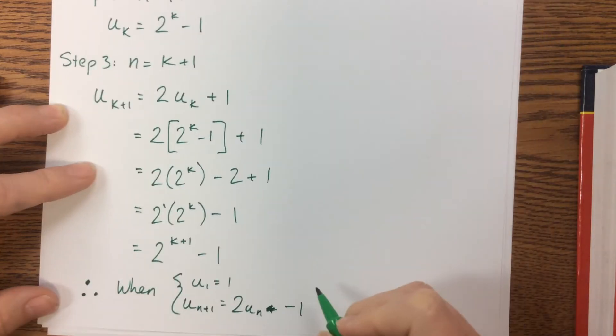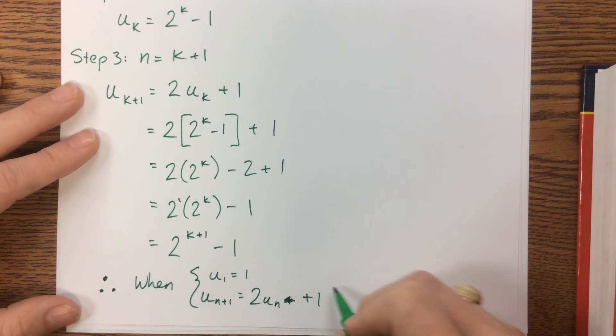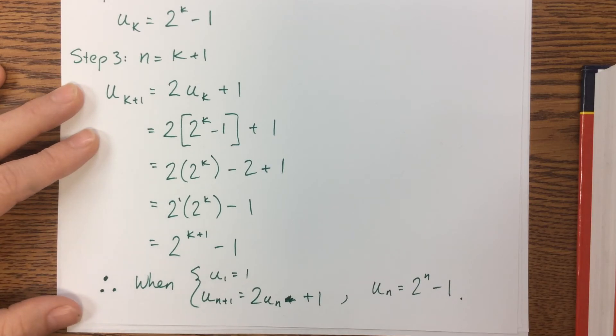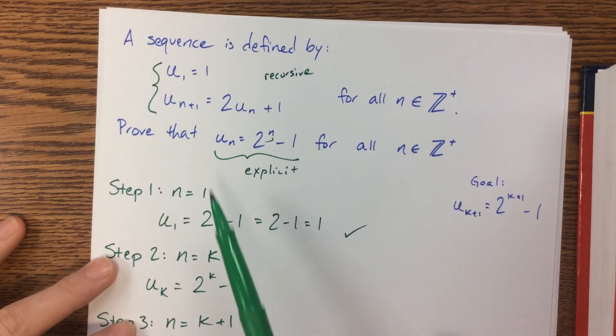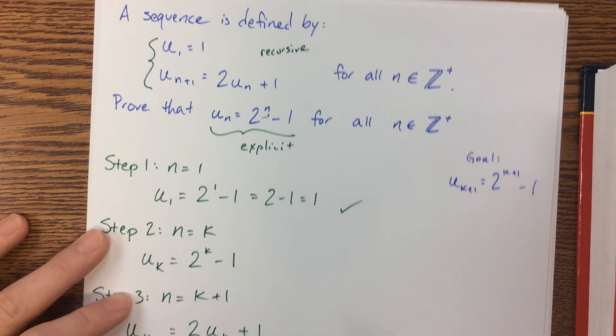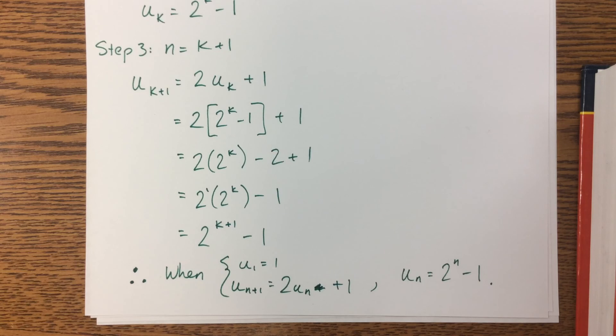Sorry, I was looking at the wrong line. When that is true, we can therefore say u_n = 2^n - 1. Does that make sense? So knowing our recursive and explicit formulas from before is very helpful when we try to do these sequence proofs by induction. Good luck!